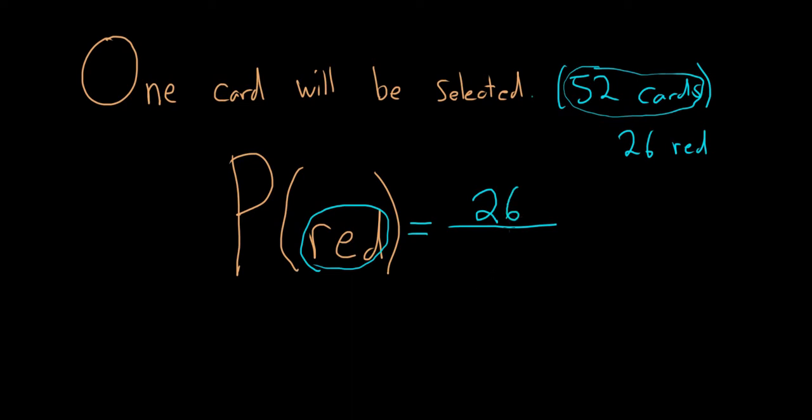In the denominator, there are 52 ways to pick a card. So the probability of picking a red card is the number of ways of picking a red card divided by the number of ways of picking a card. So this is going to be 1 over 2.